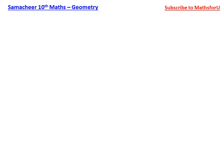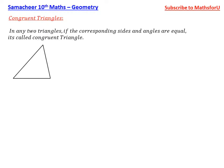First, we will talk about congruent triangles. In any two triangles, if the corresponding sides and angles are equal, it is called a congruent triangle.